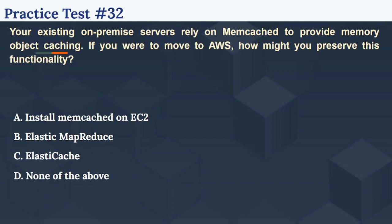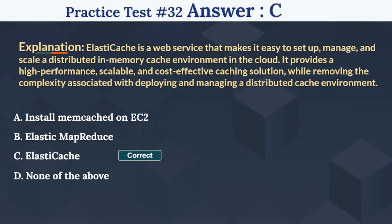The right answer is C, ElastiCache. ElastiCache is a web service that makes it easy to set up, manage, and scale a distributed in-memory cache environment in the cloud. It provides a high-performance, scalable, and cost-effective caching solution while removing the complexity associated with deploying and managing a distributed cache environment.